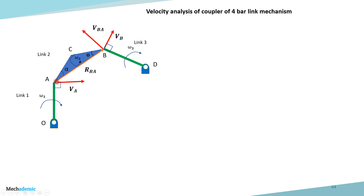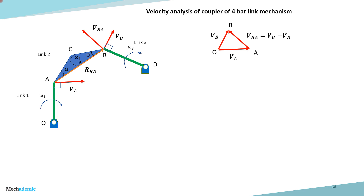Considering RBA as the vector connecting A and B, the velocity difference vector VBA — the relative velocity of B with respect to A — will be perpendicular to RBA and acting at B. In the velocity polygon, from O there is a vector in the direction of VA and another in the direction of VB. The closing vector of the polygon is VBA, which equals VB minus VA.